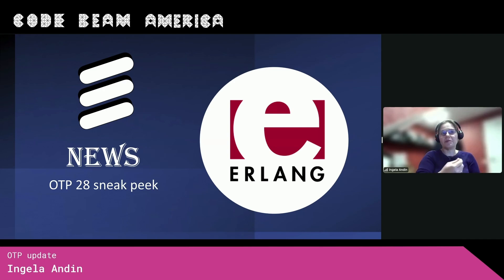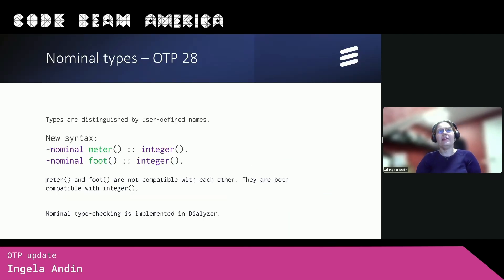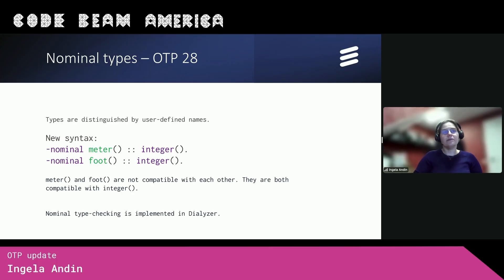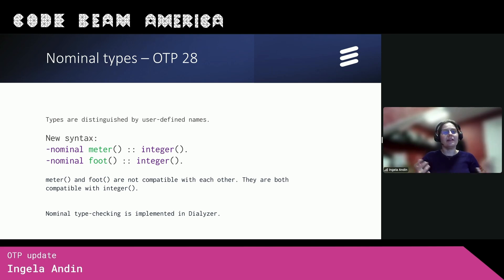Let's move on to OTP-28. In OTP-28, we're going to have something called nominal types. These are types that are distinguished by user-defined names. For instance, we could define the nominal types meter and foot — they would both be compatible with the built-in type integer, but not compatible with each other. So if in our program we mix up meters and feet, Dialyzer is going to complain, which is a very good thing, because mixing up meters and feet can get very strange results with potentially disastrous consequences.